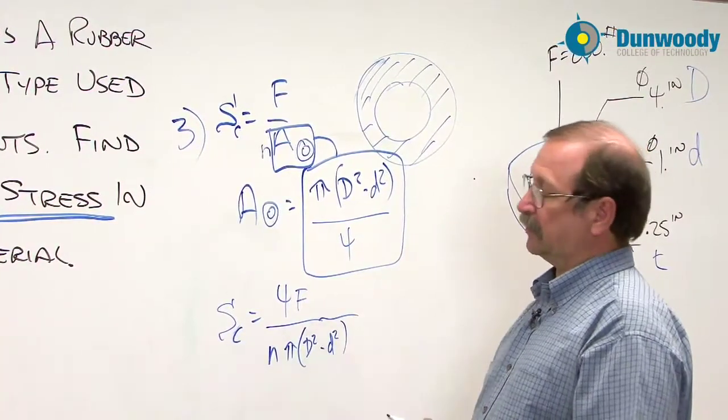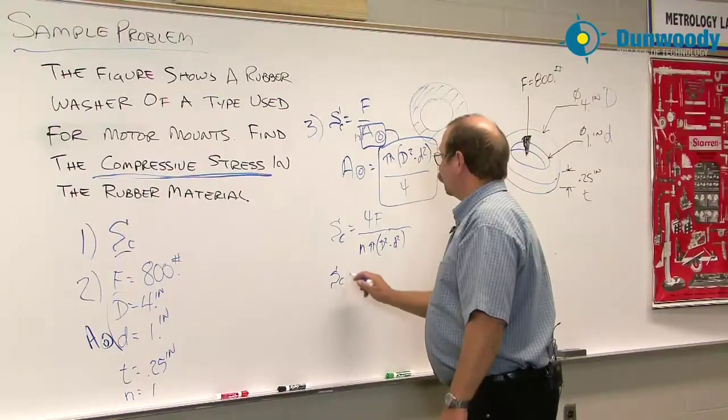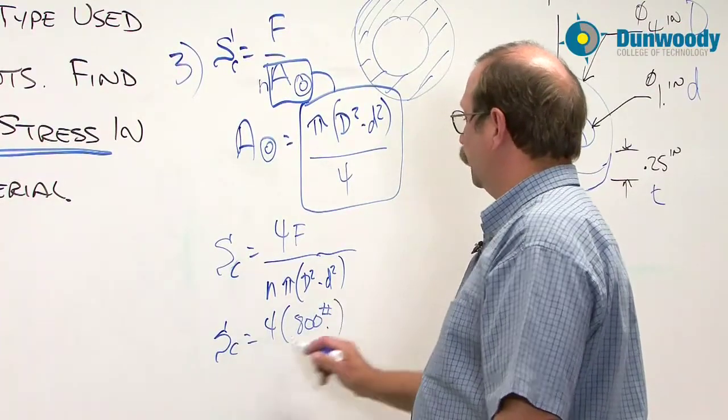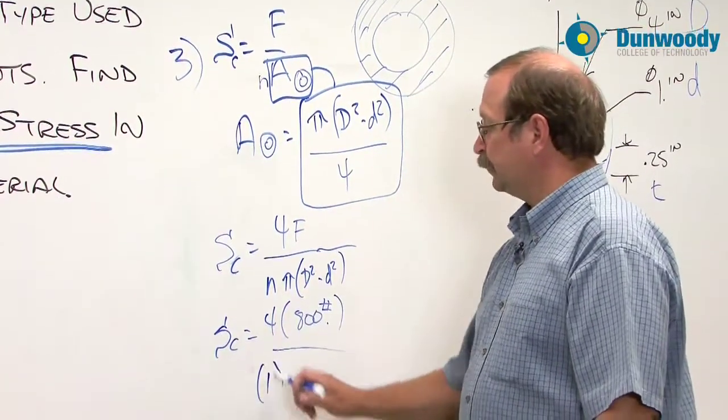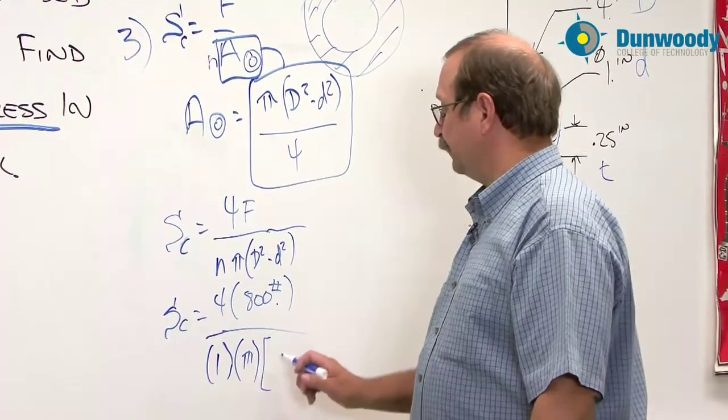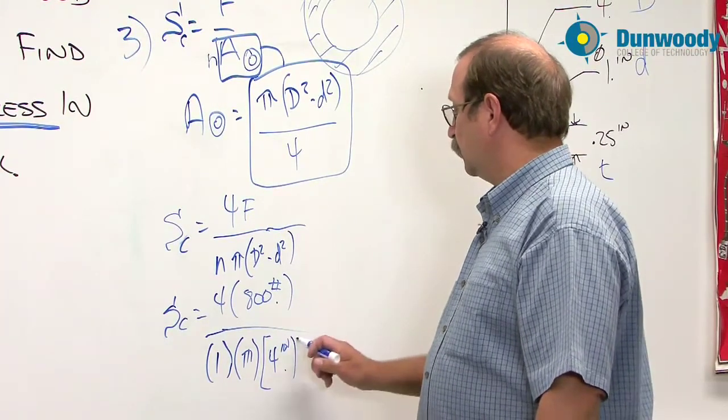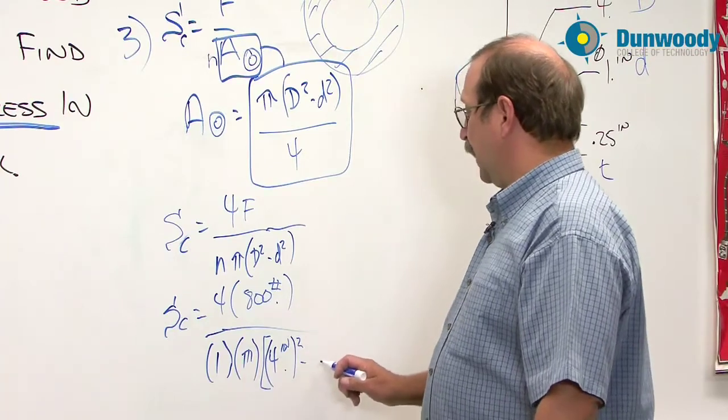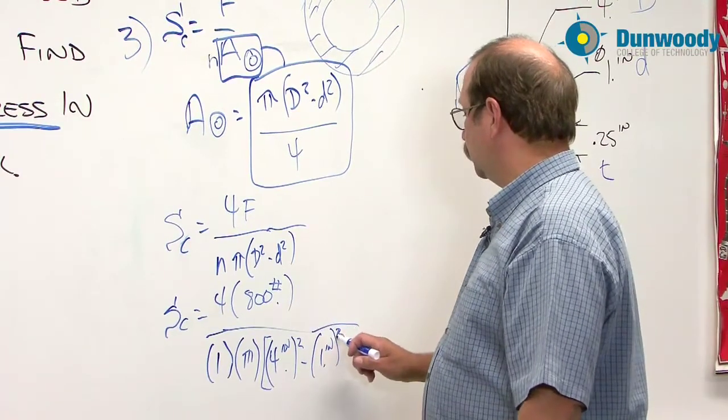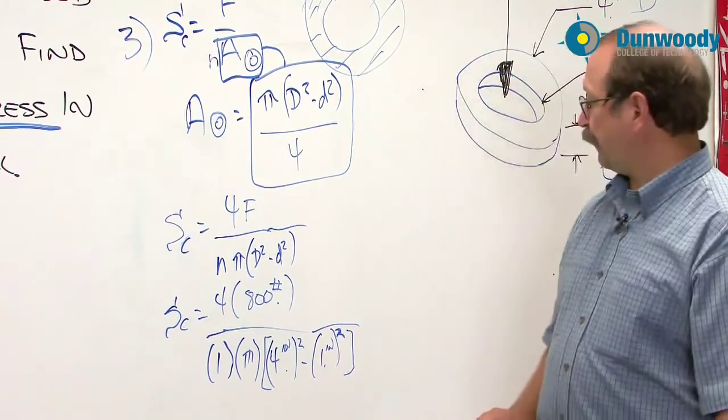From here we can start filling in the values. So we've got our unknown compressive stress is equal to four times our 800 pounds divided by N is one. Pi is a constant. And then we have capital D is four inches squared minus small d is one inch squared. And that's our formula.